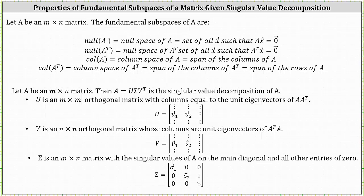Welcome to a lesson on how to determine the fundamental subspaces of a matrix given the singular value decomposition of the matrix. Let A be an n by n matrix. The fundamental subspaces of A are the null space of A, the null space of A transpose, the column space of A, and the column space of A transpose, which is also equal to the row space of A.